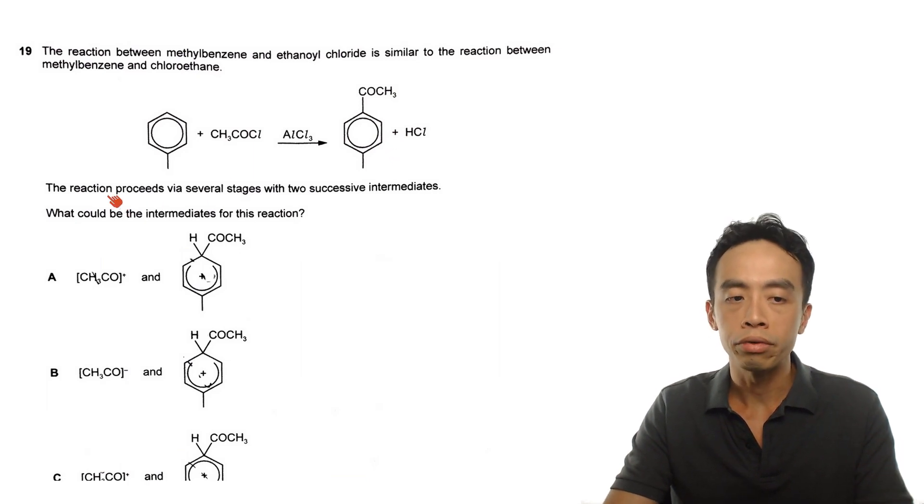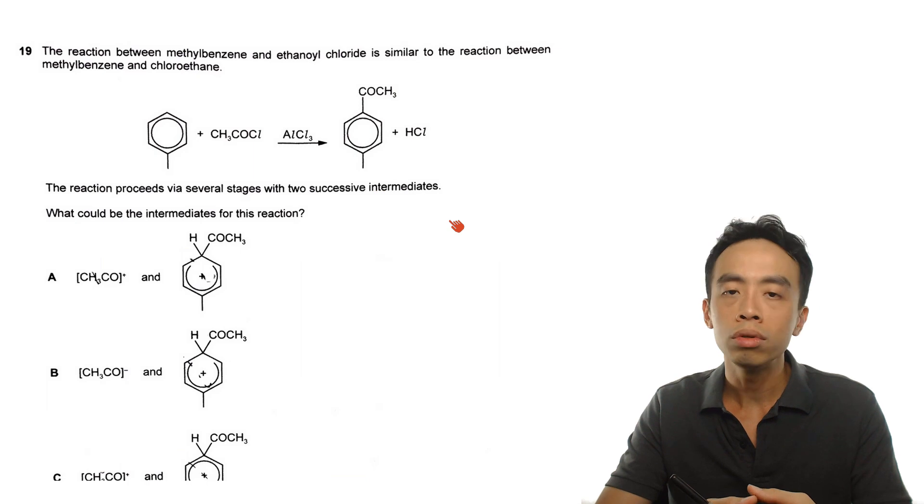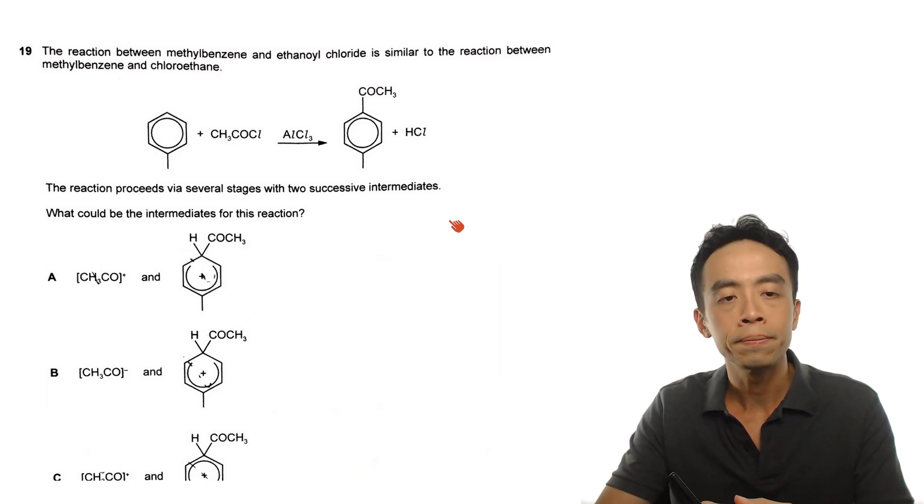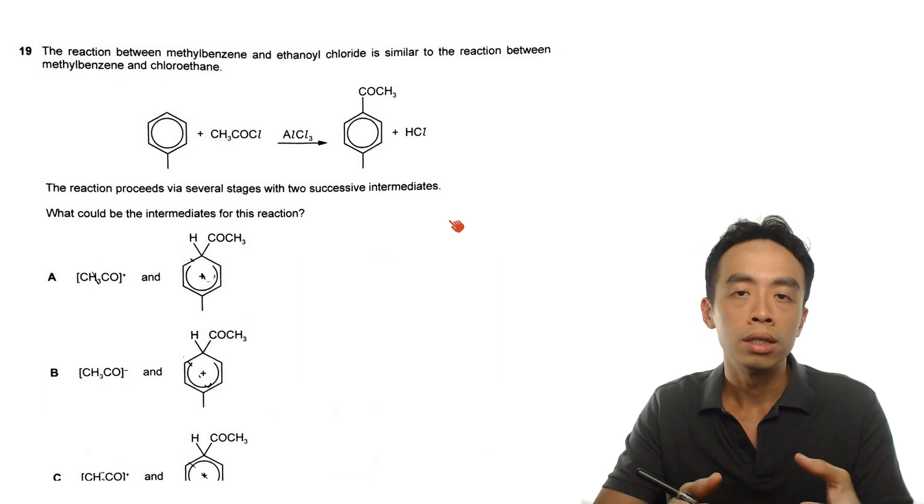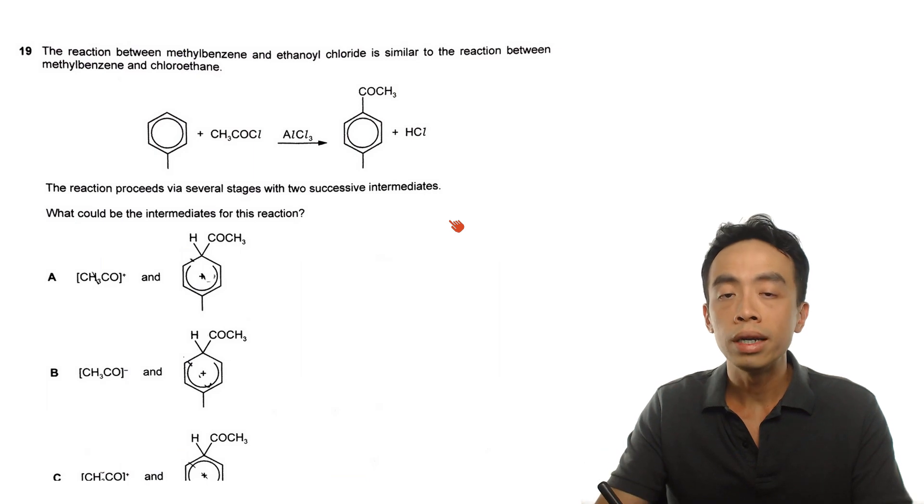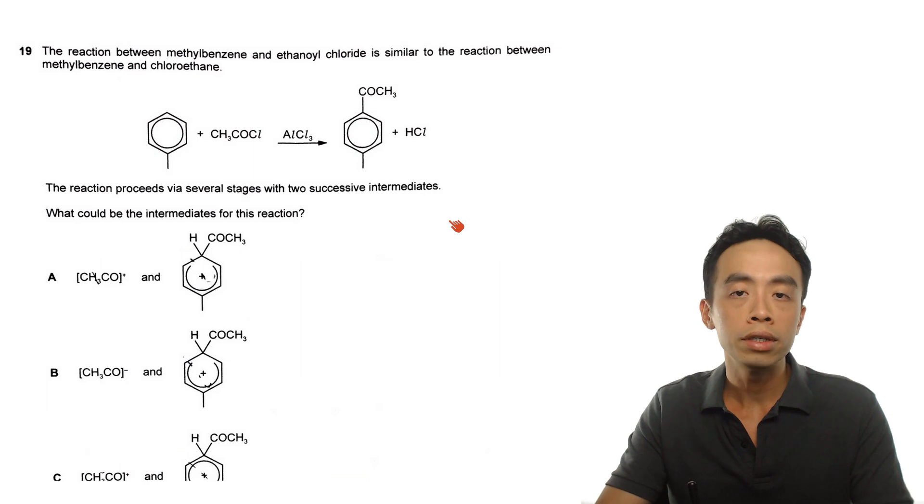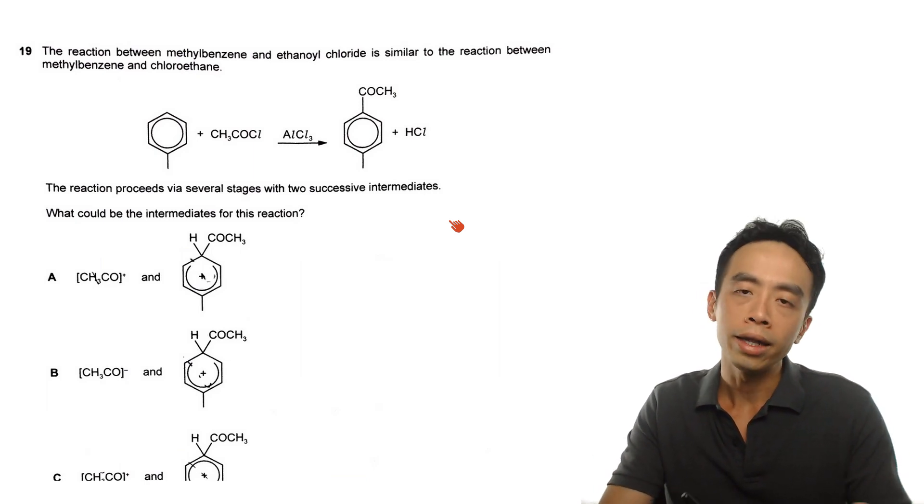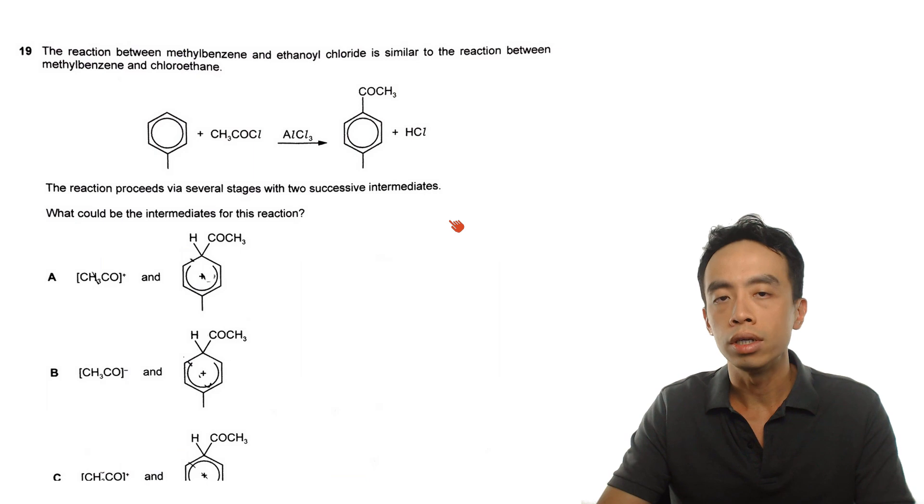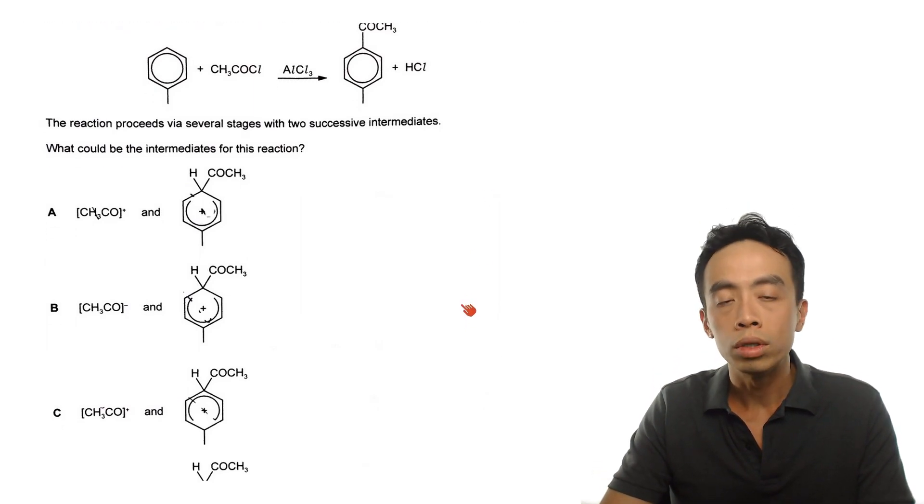So the question says that the reaction proceeds via several stages with two successive intermediates. What could be the intermediates for this reaction? And then we are given four options A, B, C, D. Of course we want to run through and decide which is the reasonable answer. Now, this question is involving the electrophilic substitution reaction of benzene. If you are not familiar with the electrophilic substitution of benzene, I actually have a previous video involving this mechanism. So it is good to take a look at the mechanism first before we come back to this question. Now moving on, what would the intermediates be?